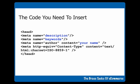So this is the code that you need to insert. It looks very complicated, but it's actually pretty simple. There are only three things you need to notice: the bits in blue — the description, the keywords, and where it says your name. In the meta description area, write one line about what your site is about. In the keywords area, put 10 to 15 specific keywords relating to your website. And where it says your name, just put your name as the author of the website.